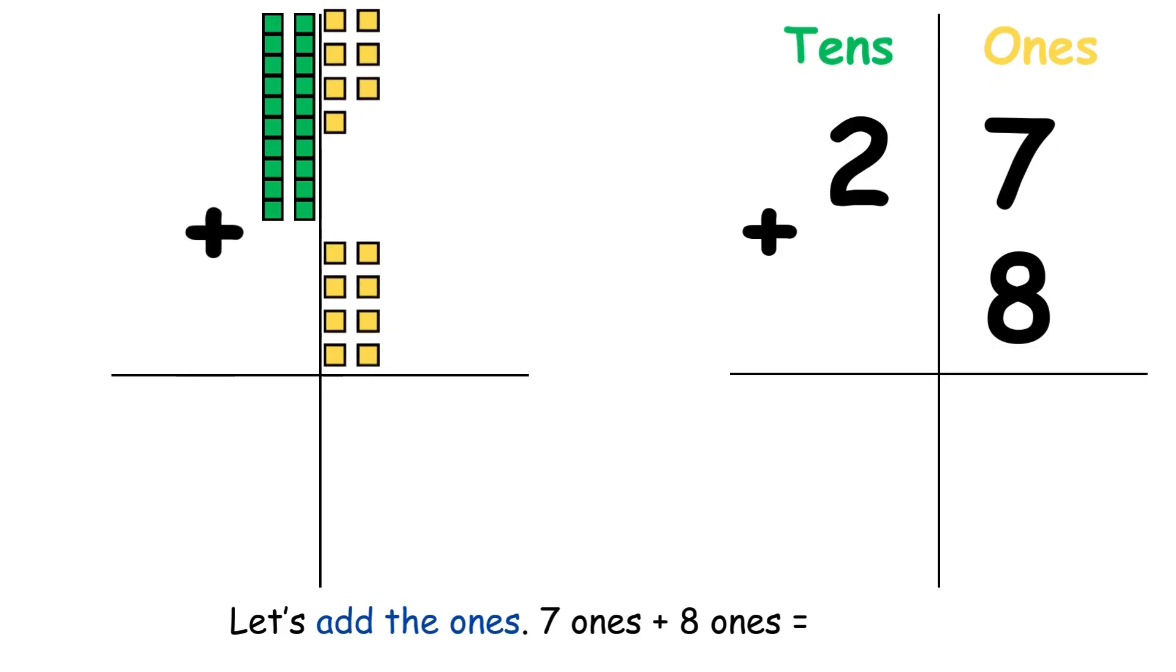Let's add the ones. 7 ones plus 8 ones equal 15 ones.